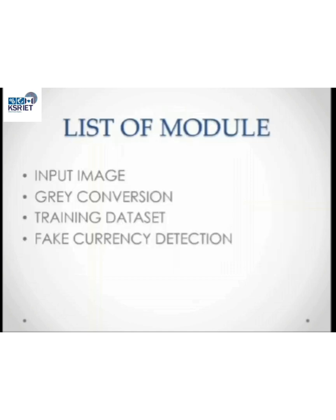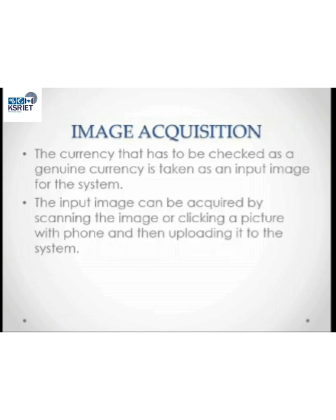There are some modules: input image, gray conversion, training data set, and fake currency detection. Image acquisition: The input image can be acquired by scanning the image or clicking a picture with a phone and then uploading it into the system.